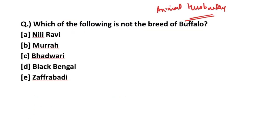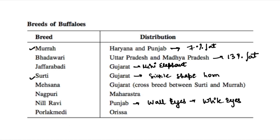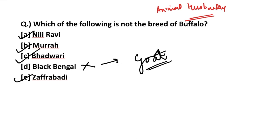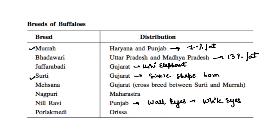Going back to the question — which of the following is not a breed of buffalo? Nili-Ravi is a breed, Murra is a breed, Badwari is a breed, Jaffarabadi is a breed. Black Bengal is not a breed of buffalo — it is a breed of goat, and a very important one because it is famous for its excellent meat.